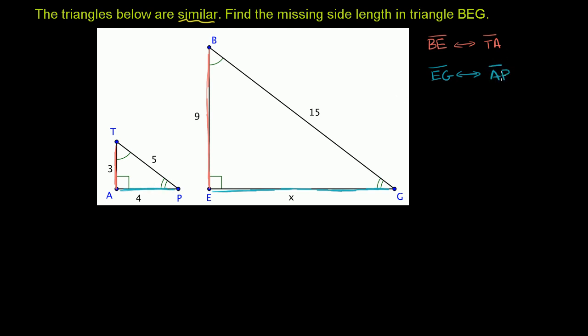And we know from similar triangles that the ratio between corresponding sides has to be the same. So for example, the ratio between BE and TA has to be the same as the ratio between EG and AP.